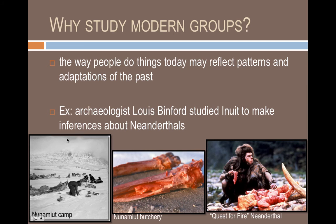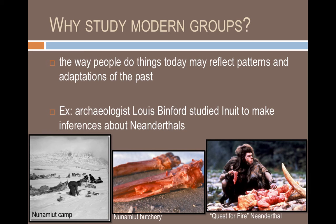One example is a focus in anthropology over the last 50 years on studying people like the Nunamyut or the Inuit, who live in very cold environments and typically hunt very large animals. We can study the way they butcher animals and compare it to findings from similar environments — for example, how Neanderthals were living 50,000 years ago in Europe. The Neanderthals also lived in a very cold environment where large animals would have been most available. By comparing what the Inuit do today versus what Neanderthals did in the past, we can better understand extinct hominin groups. This is based on the law of uniformitarianism — the idea that we can understand the past by understanding the present.